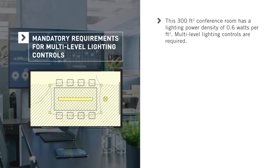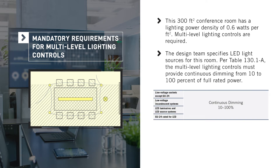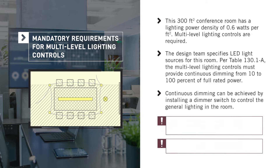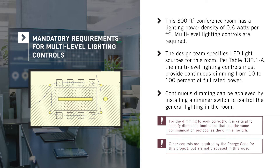As an example, let's look at a 300 square foot conference room with a lighting power density of 0.6 watts per square foot. Under the Energy Code, multi-level lighting controls are required in this space. The design team specifies LED light sources for this room. Per Table 130.1-A, this means the multi-level lighting controls must provide continuous dimming from 10 to 100 percent of full rated power. This can be achieved by installing a dimmer switch to control the general lighting in the conference room. For the dimming to work correctly, it is critical to specify dimmable luminaires that use the same communication protocol as the dimmer switch, among other considerations.